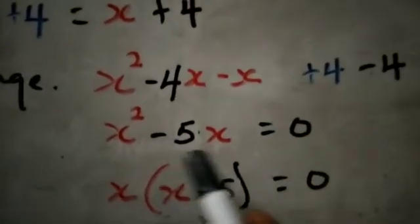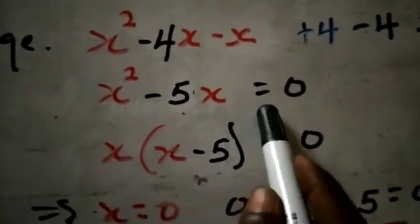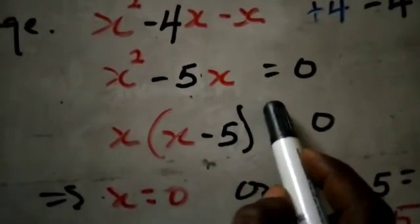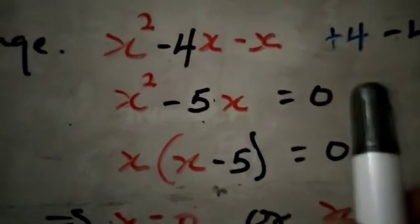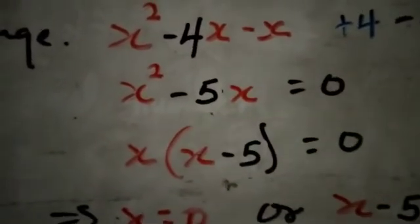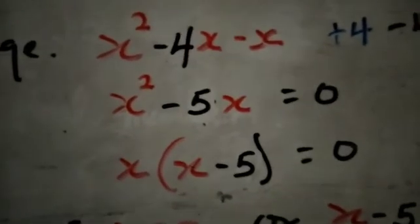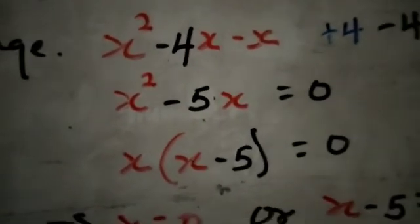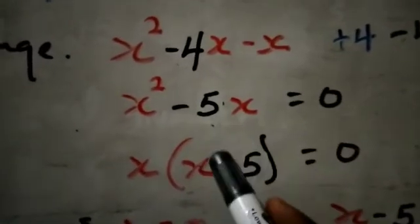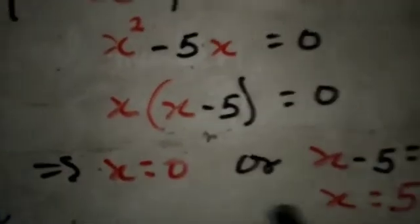We have arrived at the quadratic equation x² - 5x = 0, where the constant term is zero. This is exactly the form we were working toward — a quadratic we know how to solve. This is why we went through all those steps: to convert the radical equation into a solvable quadratic.